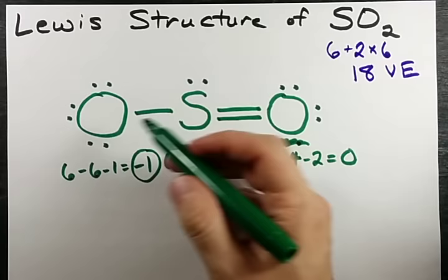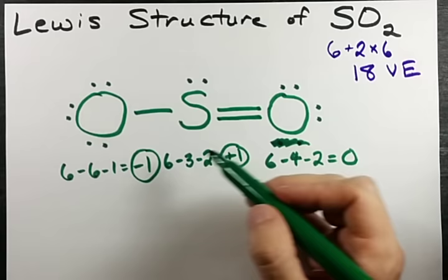And 6 valence electrons minus 6 dots minus 1 line gives a formal charge of negative 1 on this oxygen. There's no way around that. We've already satisfied the octet rule. We would be breaking the octet rule if we moved any more electrons around.